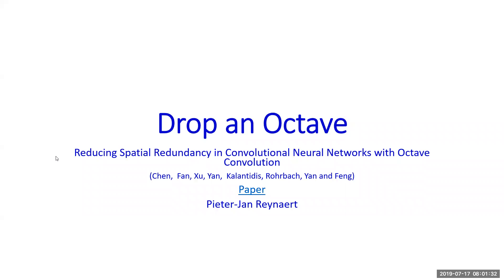So, 'Drop an Octave: Reducing Spatial Redundancy in Convolutional Neural Networks with Octave Convolution.' This paper is about using a special new form of convolution that focuses on lower-frequency features in convolutional neural networks, resulting in lower memory consumption while maintaining accuracy.